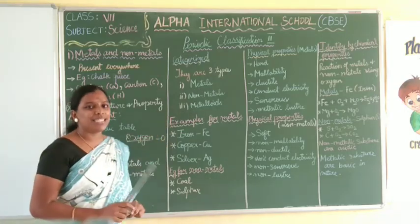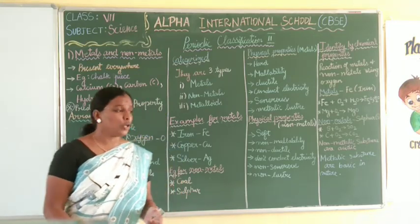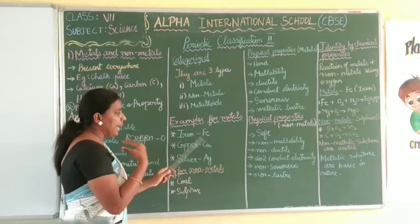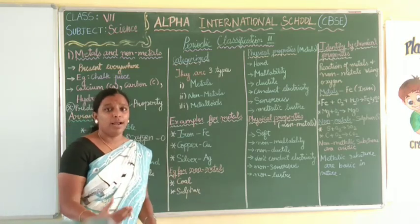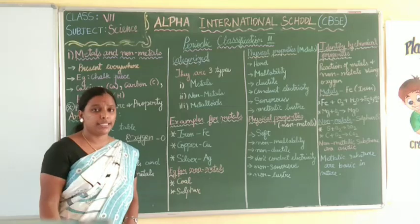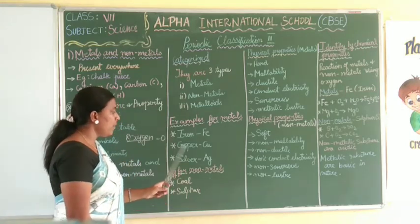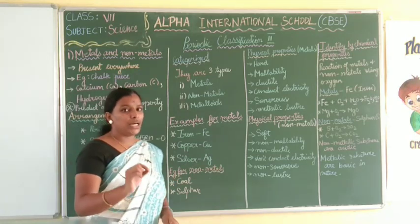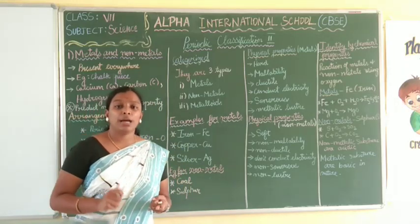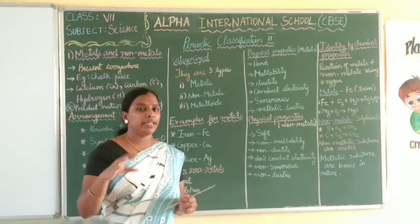First, we know that iron is a metal. Now we can see what the examples for metals are. The symbol only will be placed in the periodic table. For example, iron — the symbol won't be written as 'iron' but as its element symbol. This is copper; copper is Cu. There are many elements which have similar symbols — carbon also has C, and carbon oxide also has a similar beginning. So in such cases they are arranged by atomic number or mass number.